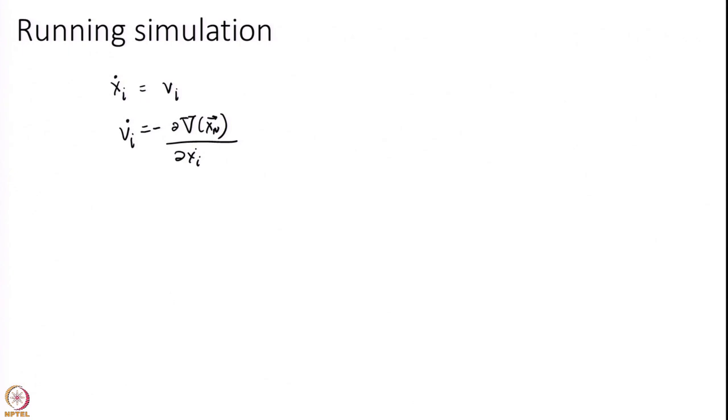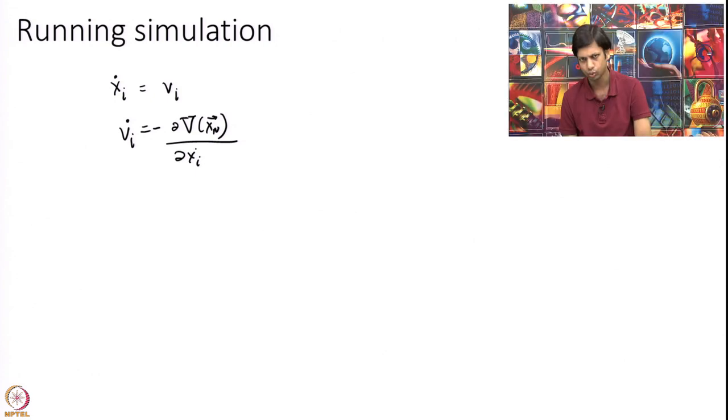Xi dot equal to Vi and Vi dot equal to minus del potential over del Xi. These are nothing but differential equations. Computers are extremely good at solving differential equations. Starting from perhaps the 60s people have figured out ways of how to solve these differential equations.